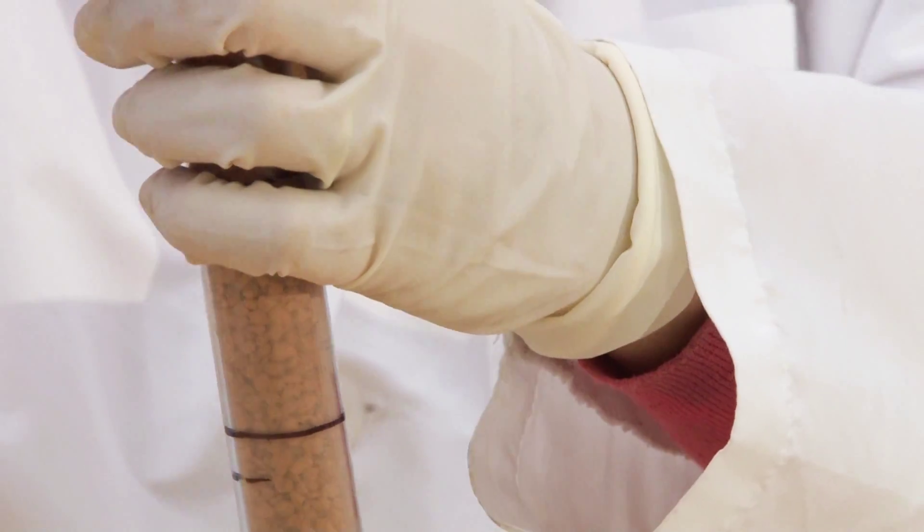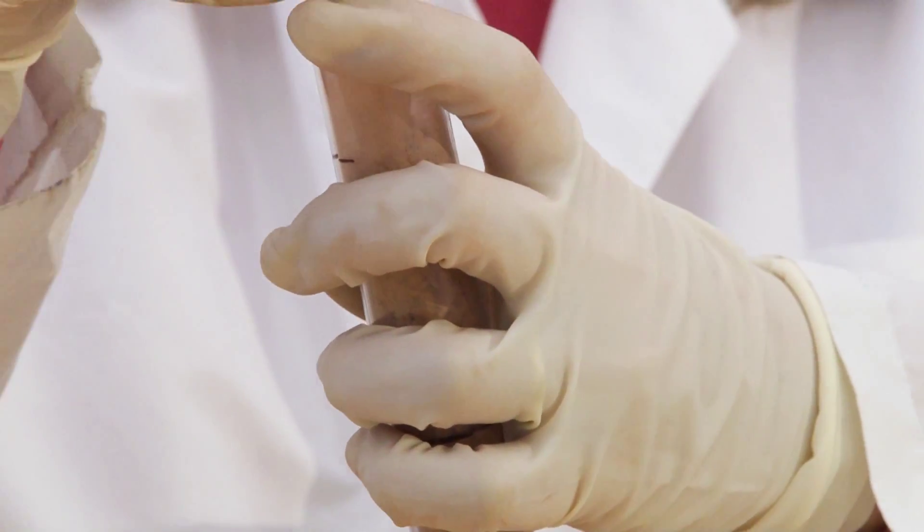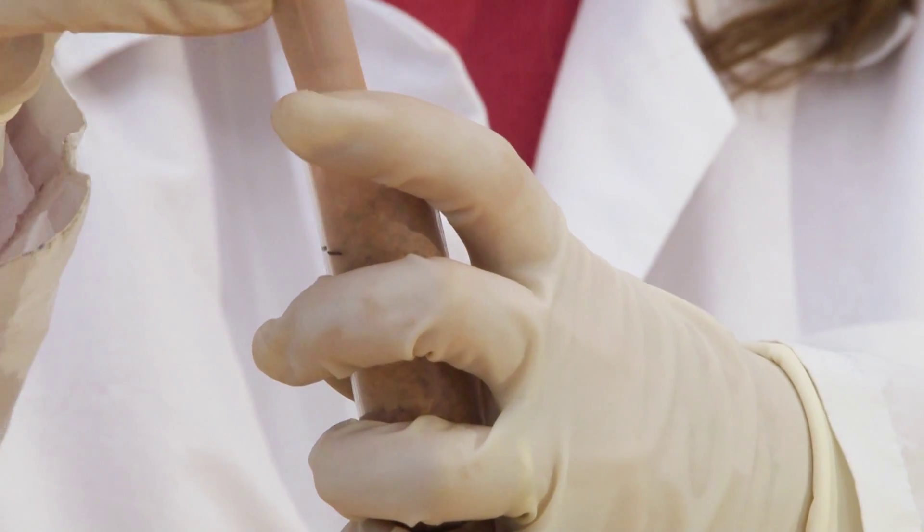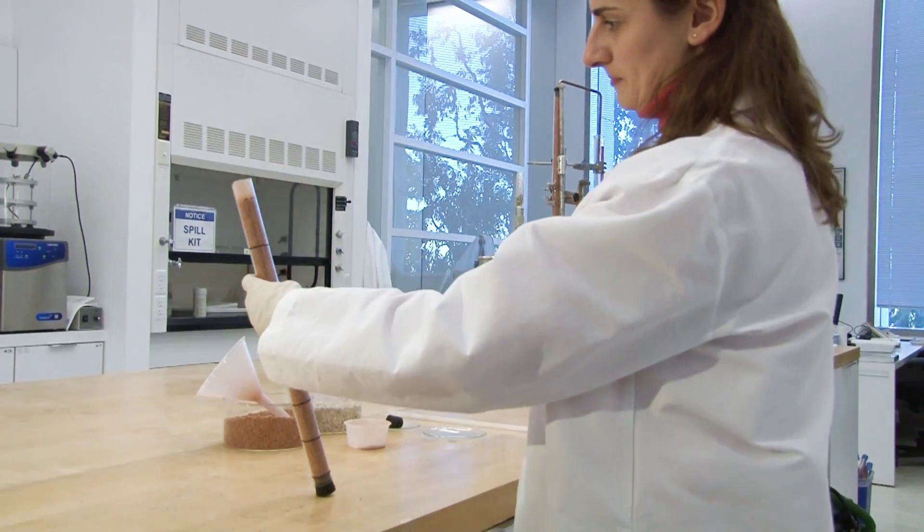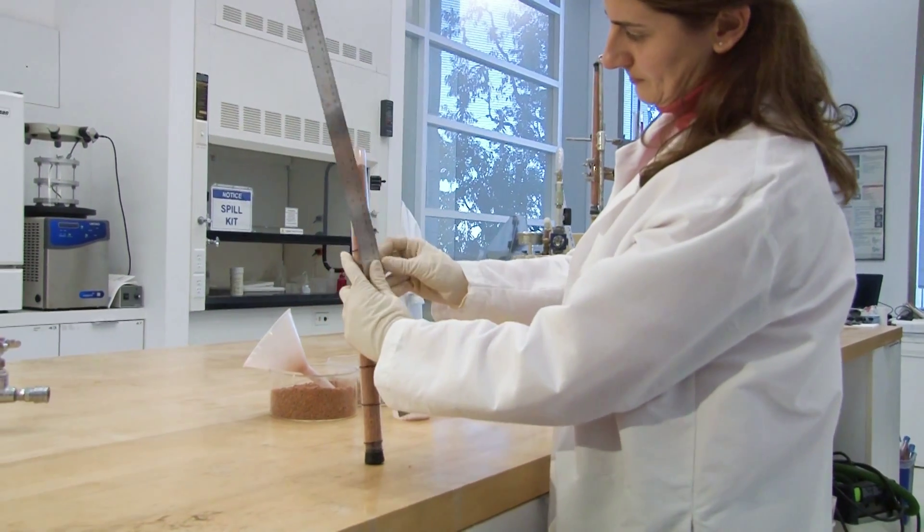Check the total height of the column. The total height of the compacted crushed brick or crushed travertine in the column should be 360 millimeter plus or minus one millimeter.